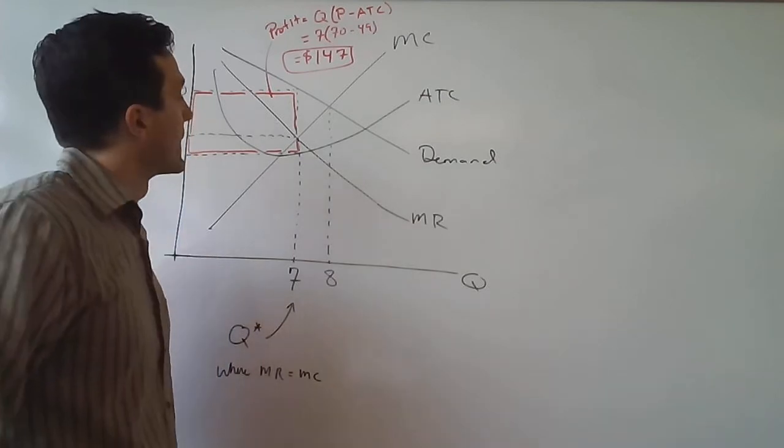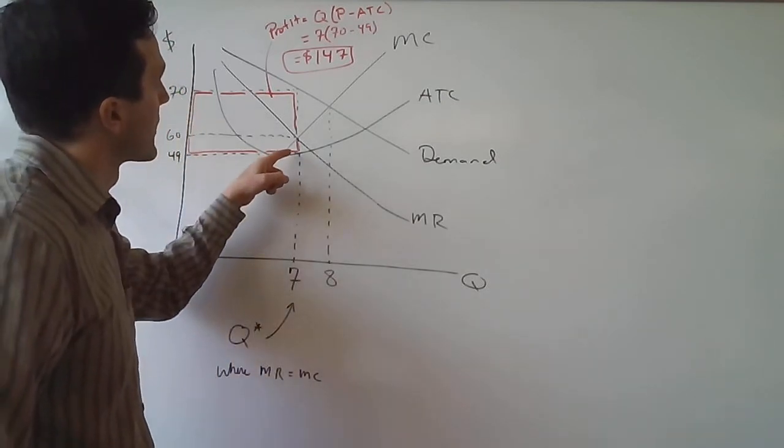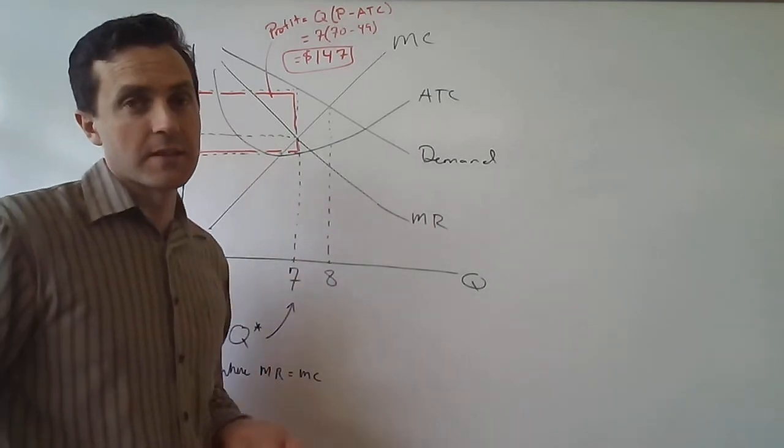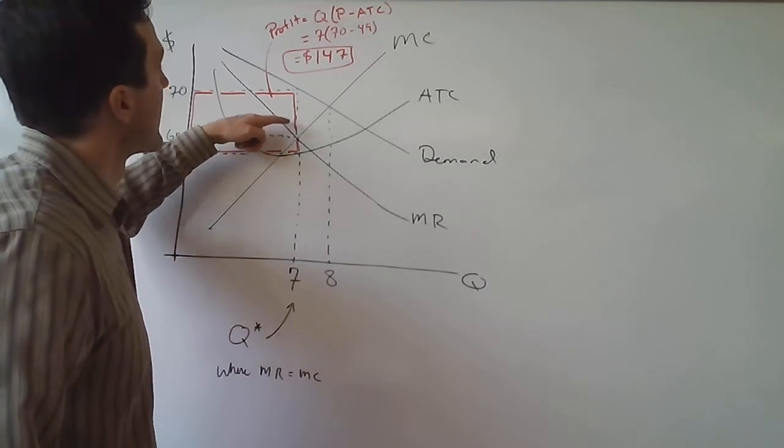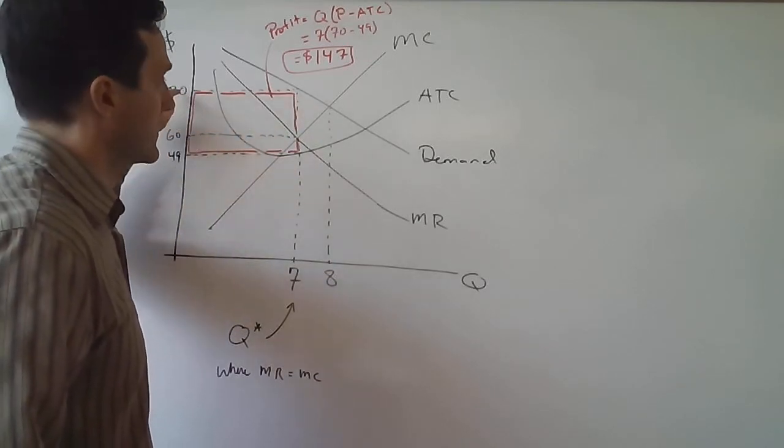And of course, if they're going to choose that quantity of seven, they will try to charge the highest price they can to sell that quantity, and that price would be $70.